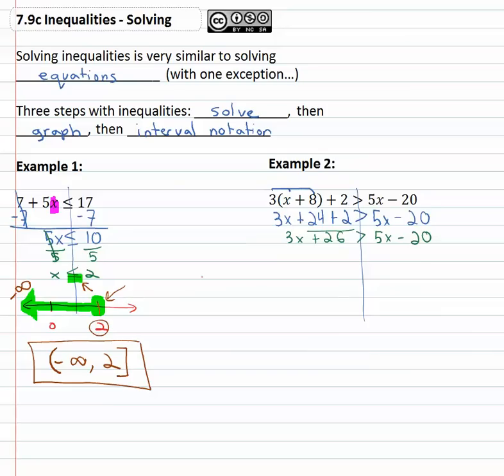Once it's simplified, we need to get the variables all on one side. I usually suggest moving the smaller one, so we'll subtract 3x from both sides, and you get 26 > 2x - 20. Now it's a two step inequality, we're going to add twenty to both sides, that gives us 46 > 2x. Finally, to get the x alone, we'll divide both sides by two. We've got 23 > x.